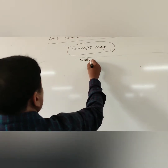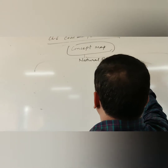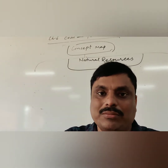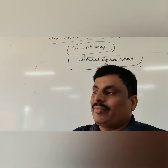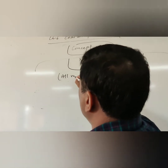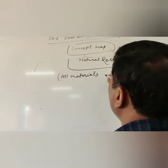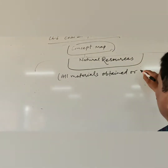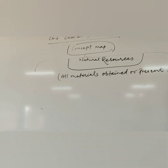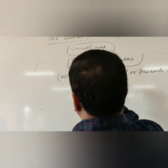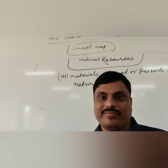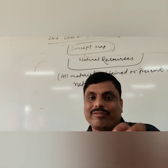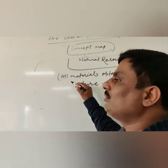First, Natural Resources. If anyone asks you what do you mean by the term Natural Resources — all materials obtained or present in nature are called Natural Resources. Coal, Petroleum — all these are Natural Resources. So, all materials that are found or present in nature are called Natural Resources.